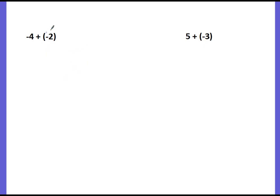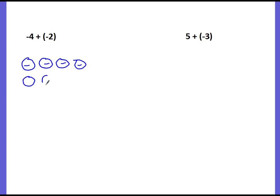As a refresher, our first example is negative 4 plus negative 2. I'm going to draw my four negative counters and label them with a negative symbol. Then for negative 2, I start on a second row and keep my chips lined up. Looking at them, they're all negative, so I count: 1, 2, 3, 4, 5, 6. There are six negatives, so negative 4 plus negative 2 equals negative 6.